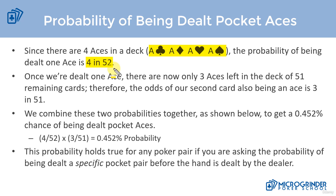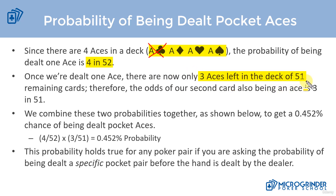Once we're dealt that ace, there's no longer four aces left in the deck. If we're dealt one of those aces — let's say, for example, the ace of clubs — that's no longer in the deck. Now there are three aces left. And because we've taken one card out, there are only 51 cards remaining as well. Therefore, the odds of our second card also being an ace is now 3 in 51.